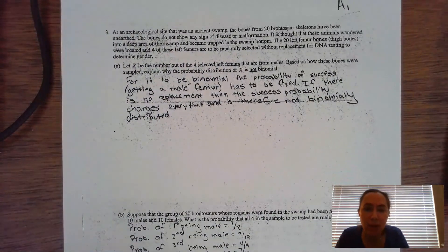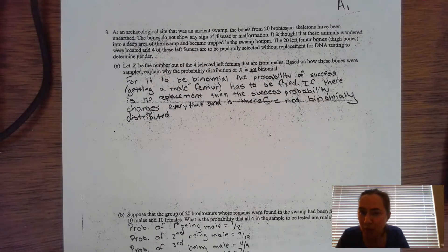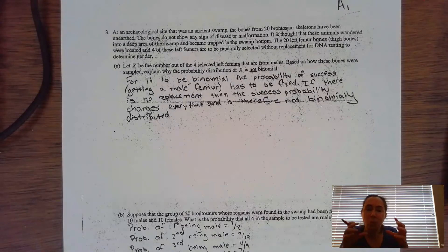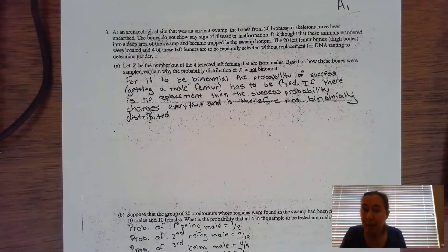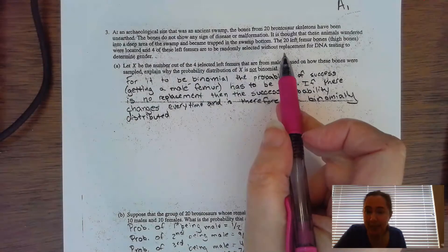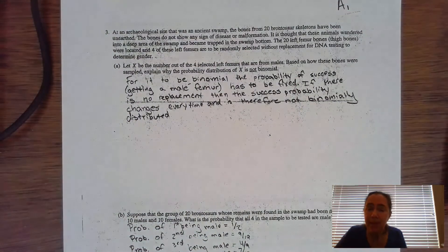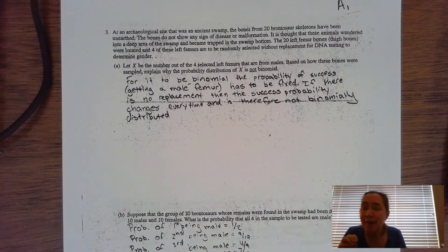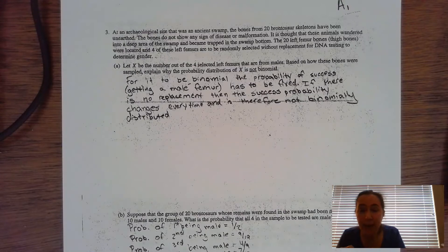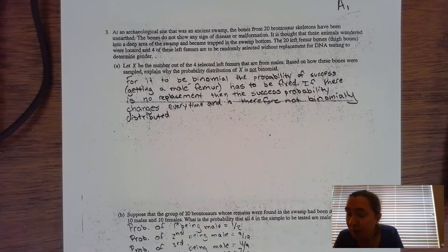Part A says let X be the number out of four selected left femurs that are from males. Based on how these bones were sampled, explain why the probability distribution of X is not binomial. They're telling you it's not binomial. You have to figure out what makes it not binomial. Binomial and geometric probability problems are based on Bernoulli trials, and that whole without replacement is going to help you out there. It's not binomial because the probability of picking a male dinosaur bone does not remain constant. After you picked one, the next pick, the probability changes.